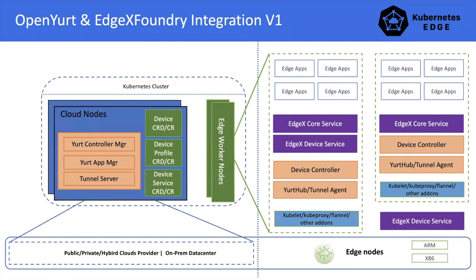Now let's look at the OpenYurt and EdgeX Foundry integration. On the cloud side, we run the Yurt Controller Manager, Yurt App Manager, and Tunnel Server Manager. You can run it on any public, private, or hybrid cloud or on a primary data center according to your requirements. On the edge side, besides the default YurtHub and Tunnel Agent, we deploy a new device controller which is responsible for syncing data between EdgeX and Kubernetes. The EdgeX core service is also deployed on the edge side. In cases where the sensor's directly connected gateway doesn't have enough resources, we can just deploy the EdgeX device service there. Edge nodes can be either ARM-based or x86-based.